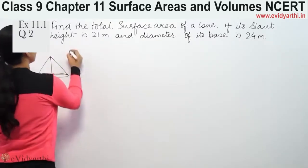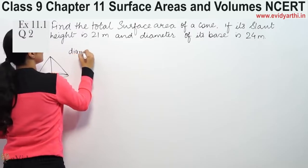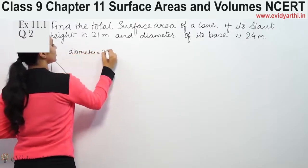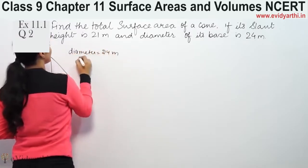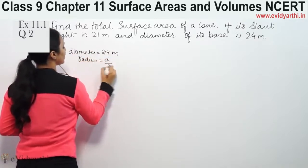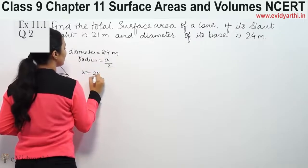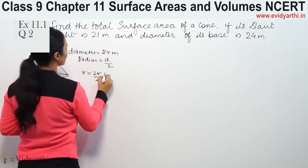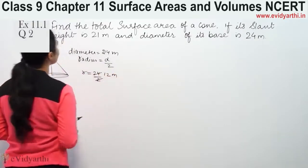Now diameter given is 24 meters. So the radius will be diameter divided by 2, that means radius is 24 by 2, which equals 12 meters. This is the radius.